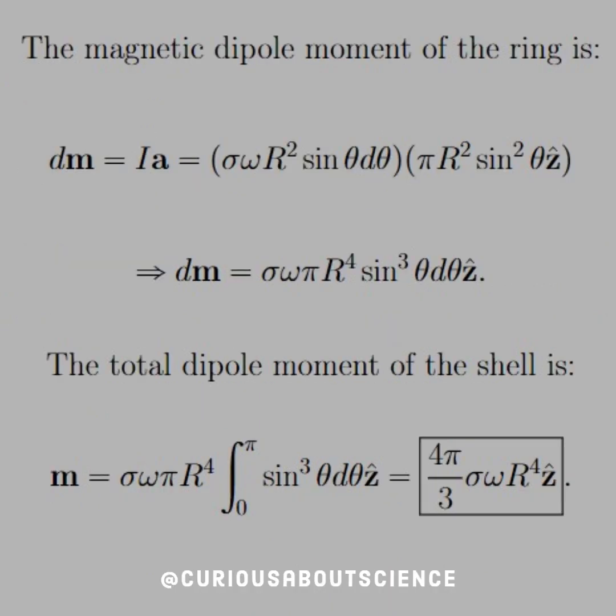Now, let's put this all together. The magnetic dipole moment of the ring is dm equals i a. Multiply that out. We see that dm is equal to sigma omega pi r to the fourth sine cube theta d theta z hat.